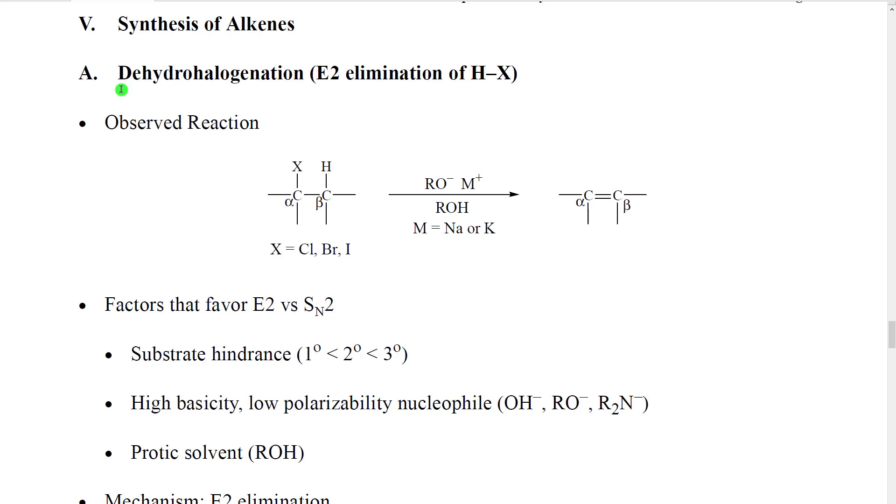This is the observed reaction. Let's look at the observed reaction. We have a reactant, technically it's a substrate. It has a halogen leaving group attached to carbon alpha and then it has a hydrogen attached to carbon beta which is adjacent to carbon alpha.